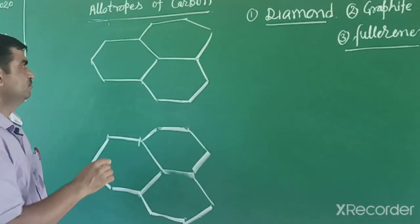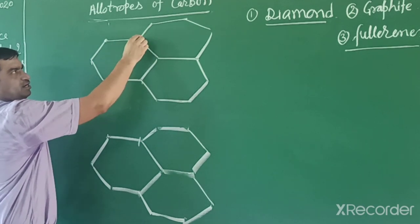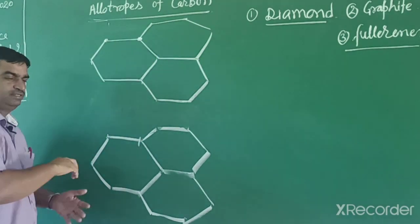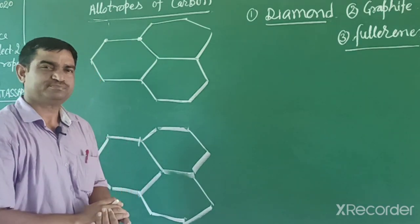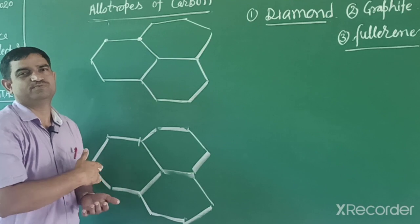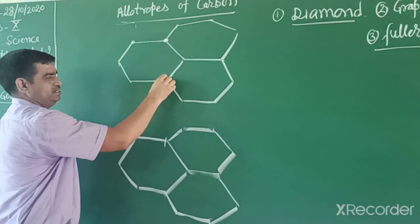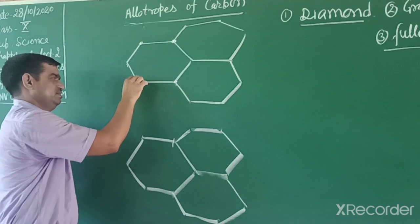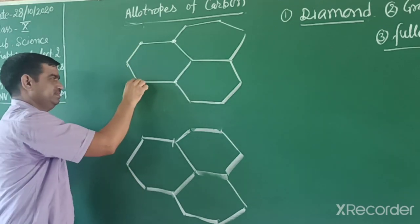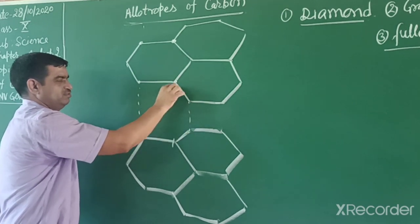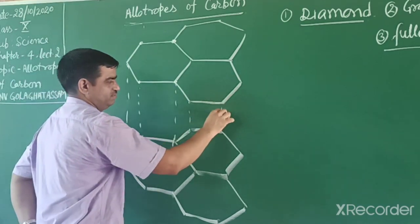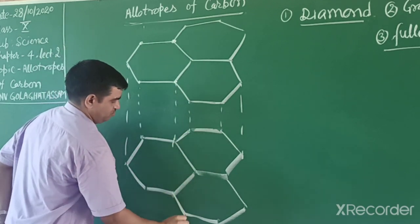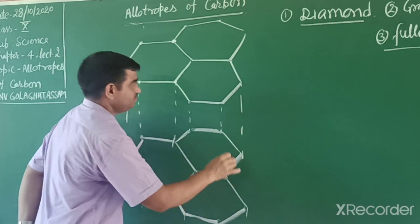In graphite, one carbon is attached to three other carbon atoms - every carbon attached to three others, with one electron free. It has a hexagonal layer structure, and that layer structure can slip from one layer to another layer. That free electron can make a pi bond - a double bond, multiple bond - and one layer is attached to another layer by this weak pi bond.